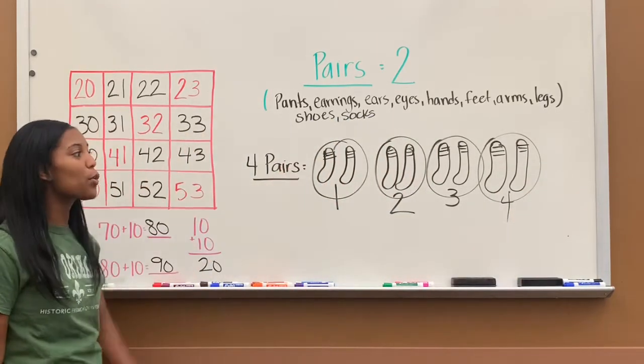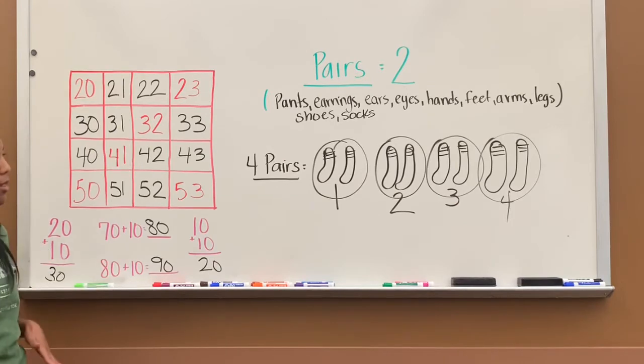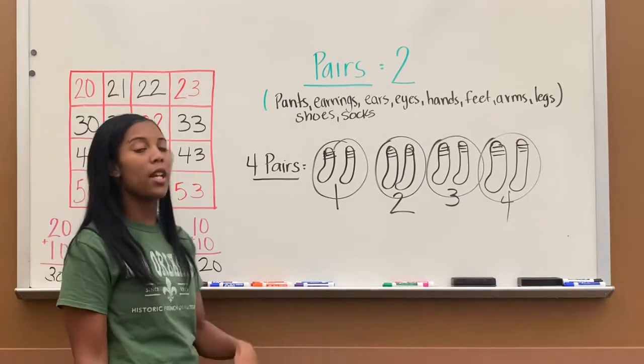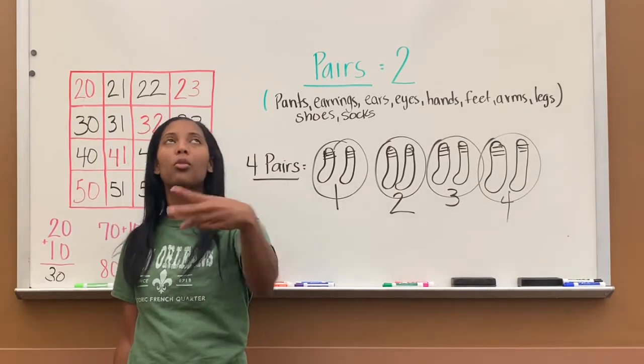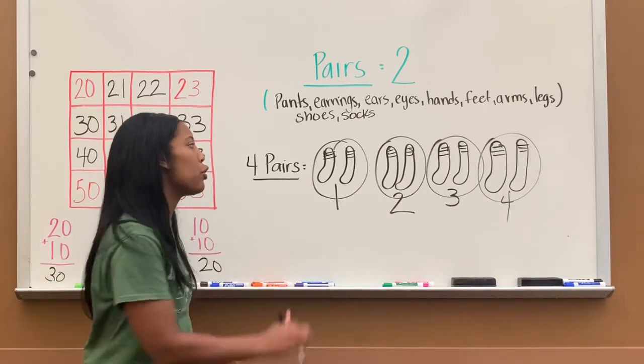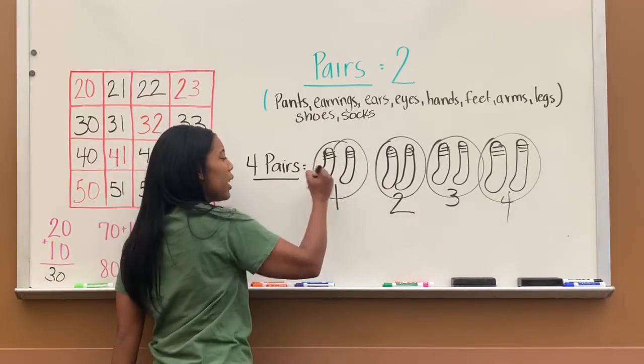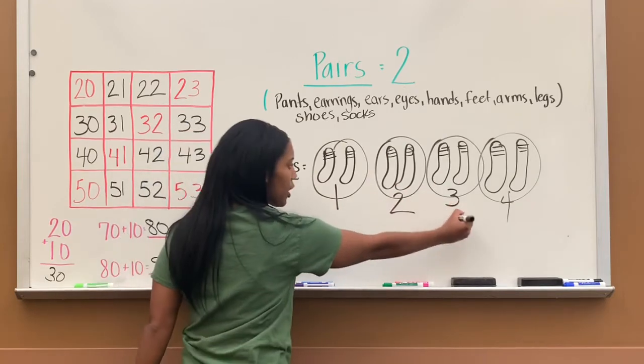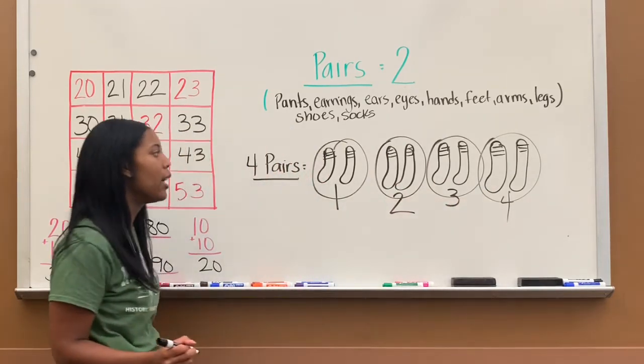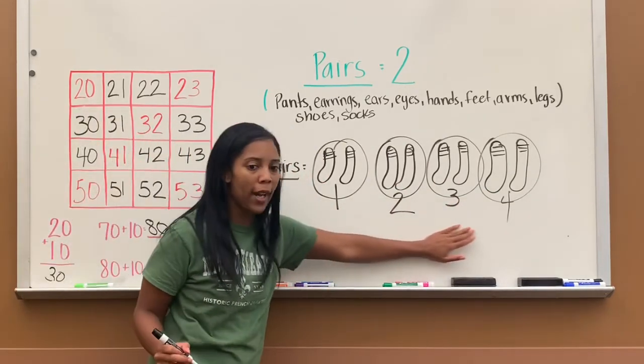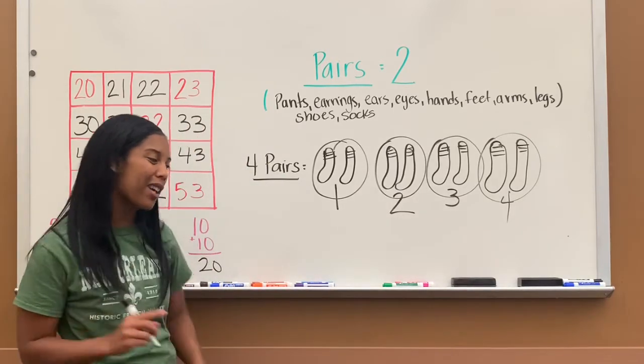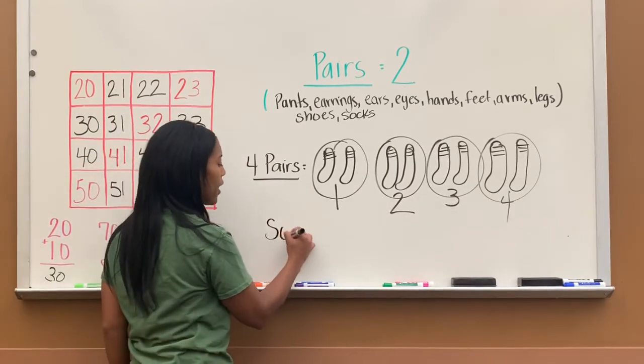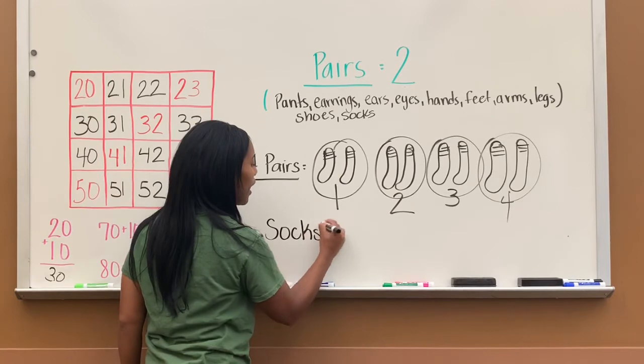So this is what four pairs looks like. Pairs come in two, which are socks too. And so when you draw them out, you draw them in twos, circle it, and then label it so that you can keep track of how many you are drawing. So we have, this is four pairs, but how many socks do I have? Now that's a different thing.